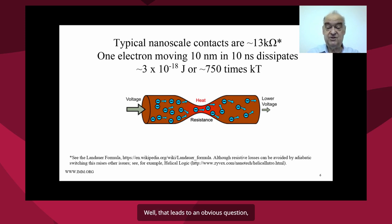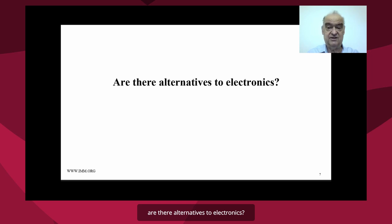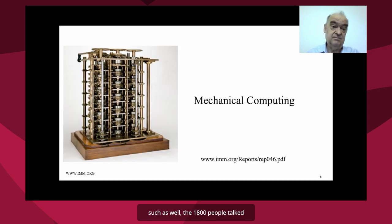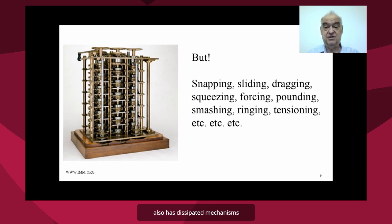Well that leads to an obvious question: are there alternatives to electronics? And the answer of course is yes. We can have such things as mechanical computing devices such as, well in the 1800s people talked about Babbage's engine or the difference engine, which is basically an early form of mechanical computing. But mechanical computing of course also has dissipative mechanisms and the dissipative mechanisms also cause problems.